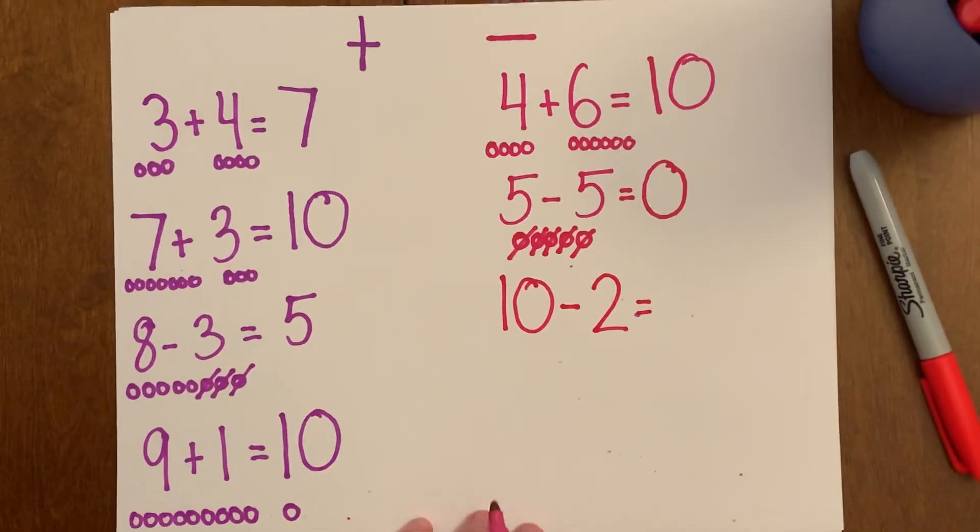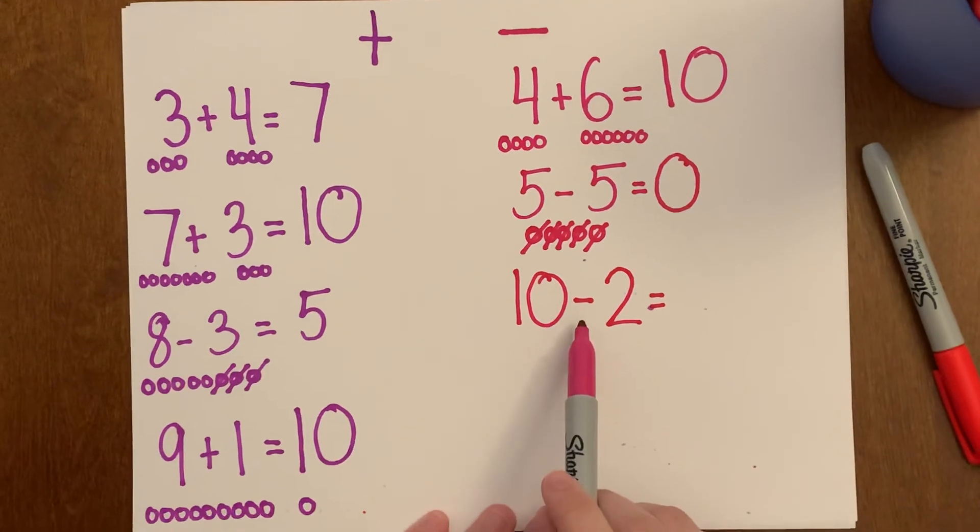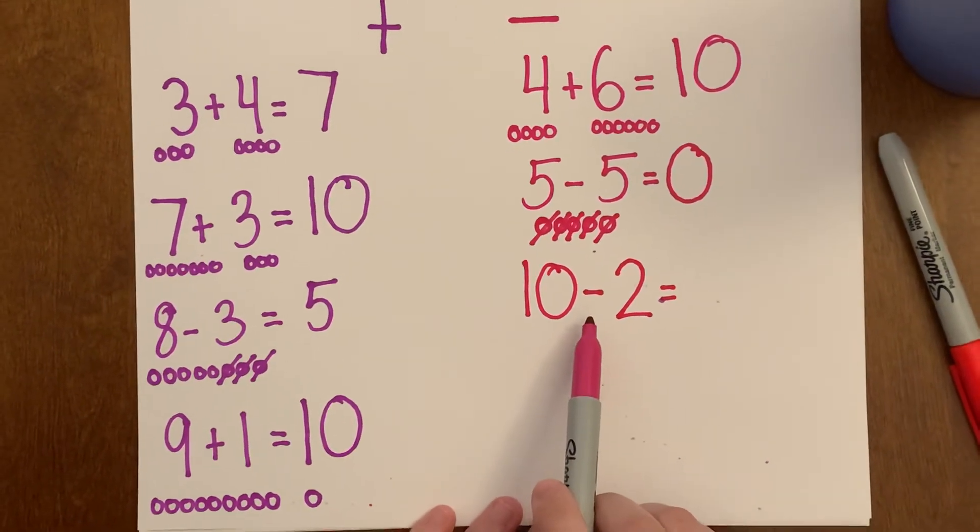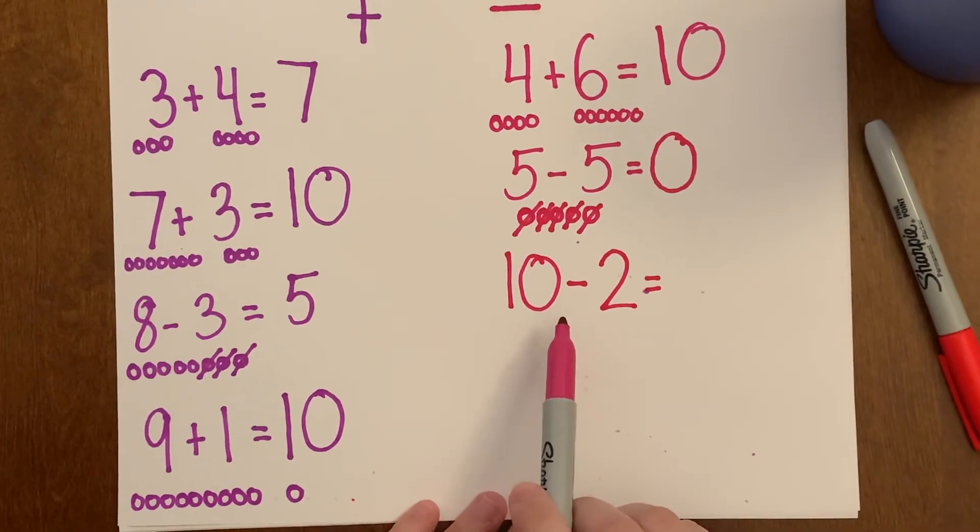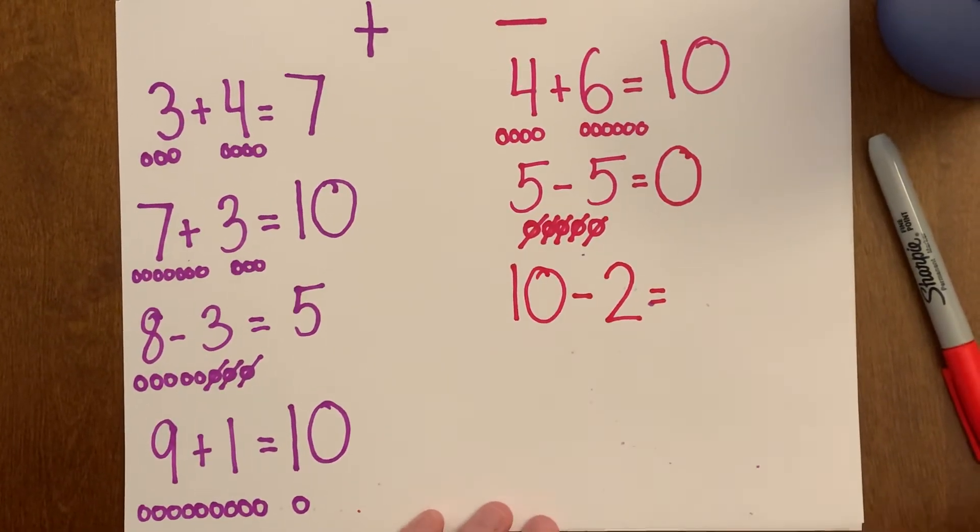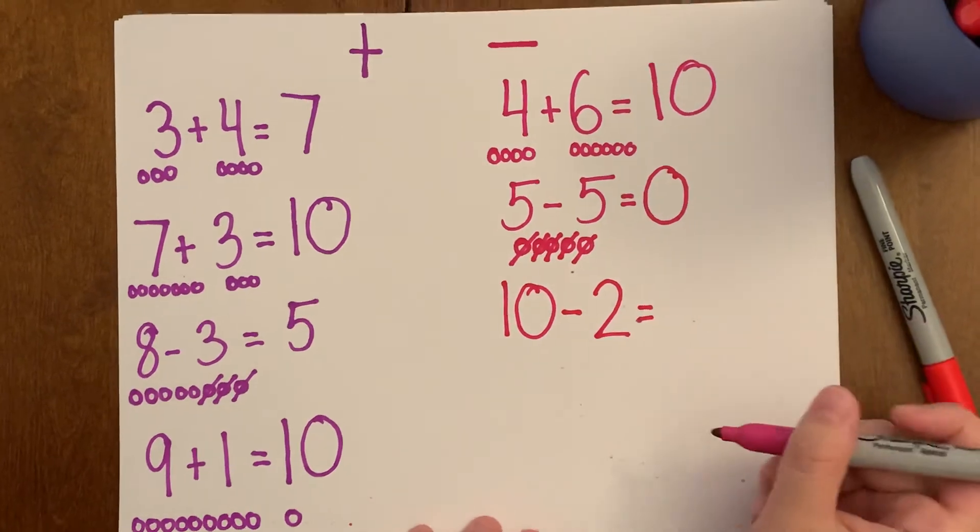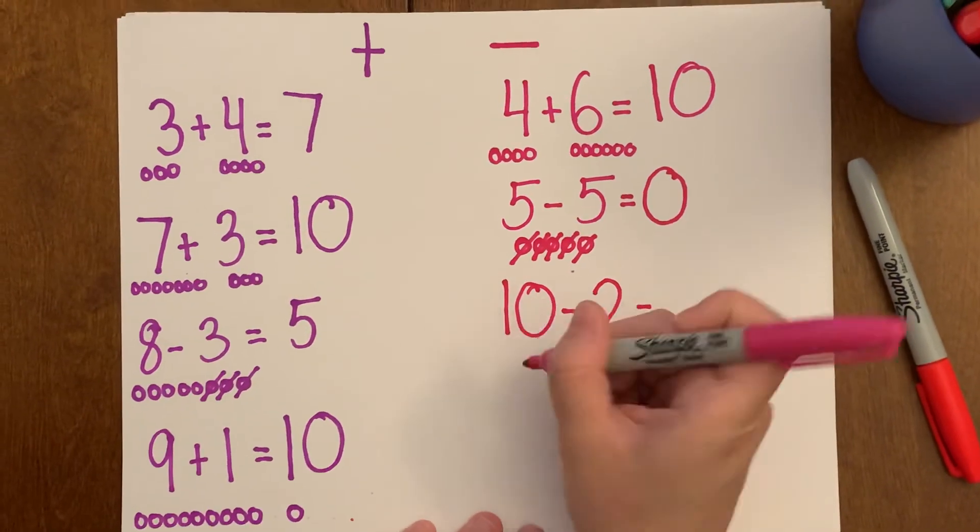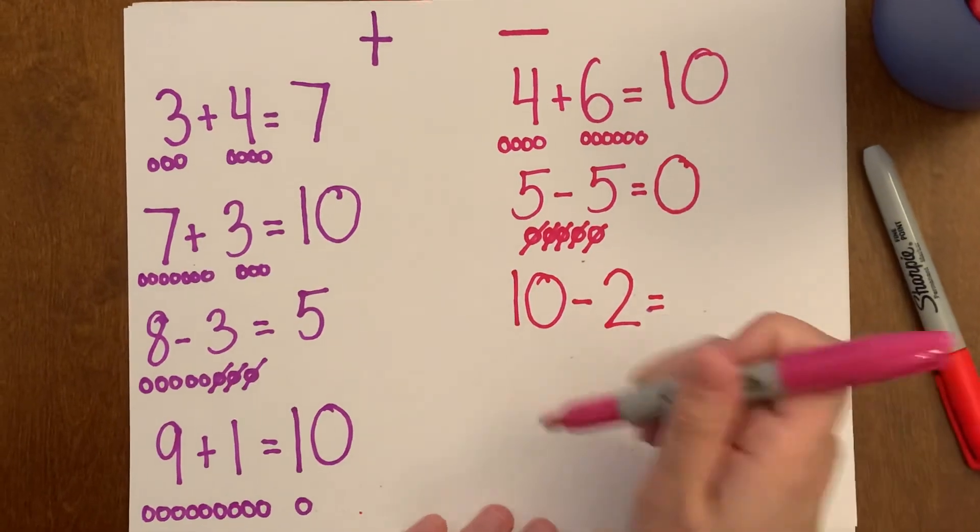Okay, let's read our number sentence. Ten minus two. Oh, okay. So our symbol is a minus. So that means we are doing adding or subtracting? Subtracting. Yes. Okay, so we're going to start with our big number and I'm going to do another drawing to help me. So I like to see my numbers. Here we go.